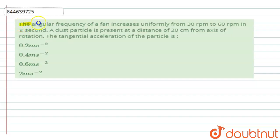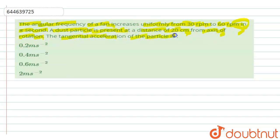The given question is: the angular frequency of a fan increases uniformly from 30 rpm to 60 rpm in pi seconds. A particle — here it is a dust particle — is present at a distance of 20 centimeters from the axis of rotation. The tangential acceleration of the particle is? The options are: 0.2 m/s², 0.4 m/s², 0.6 m/s², and 2 m/s².